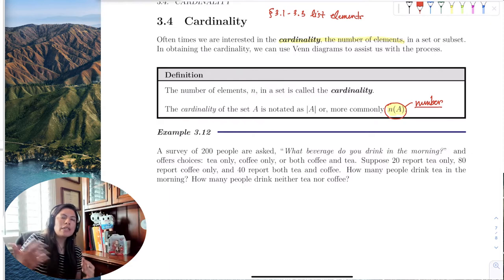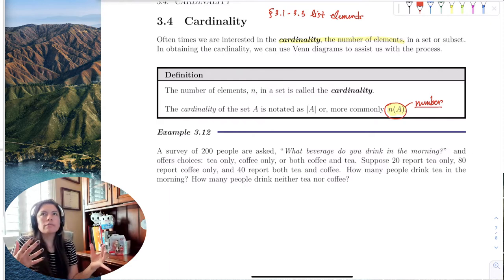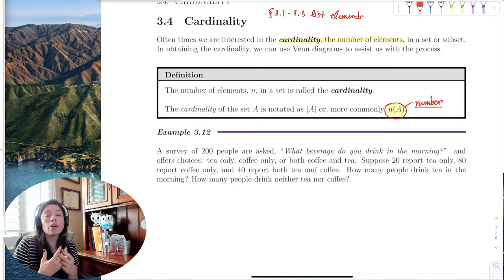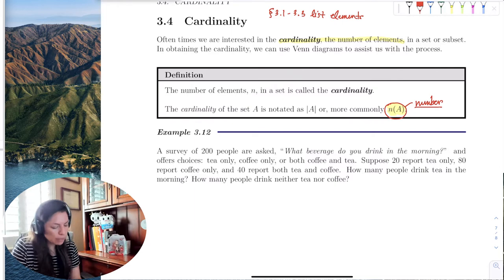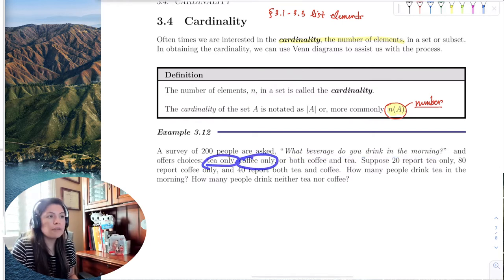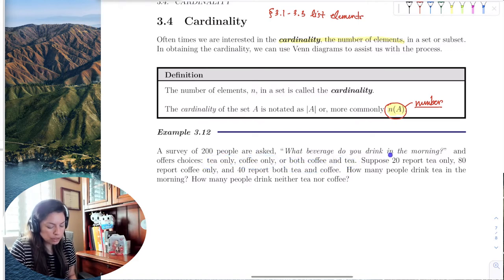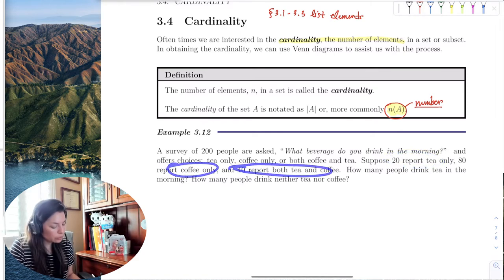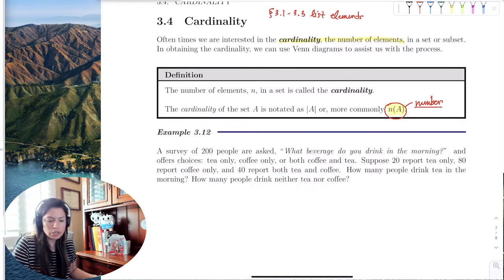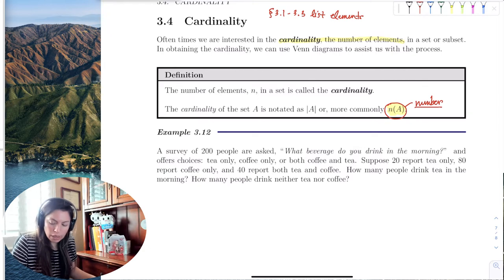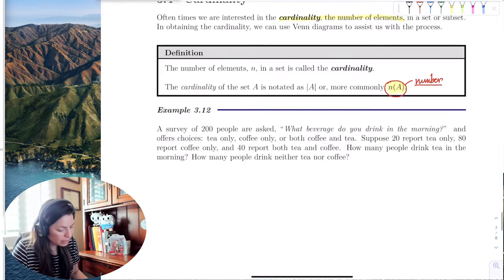So let's look how Venn diagrams kind of blend in with cardinality. In this example, we surveyed 200 people and asked, what beverage do you drink in the morning? And it offers the choice as tea only, coffee only, or both coffee and tea. So if we report that 20 like tea only, 80 report coffee only, 40 report both, how many people drink tea in the morning? How many people drink neither tea nor coffee? So there's two questions here.